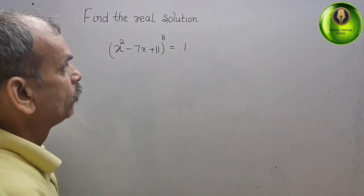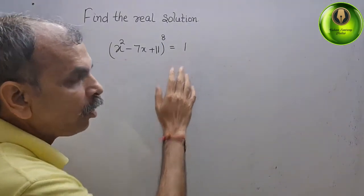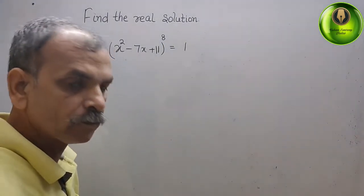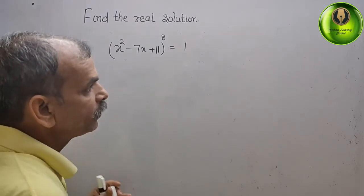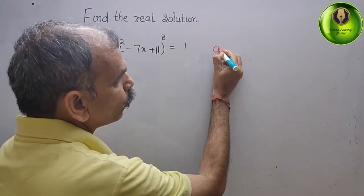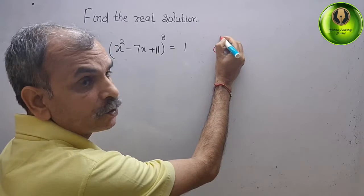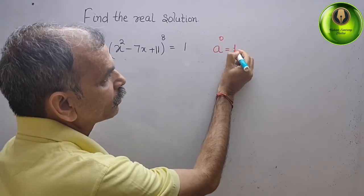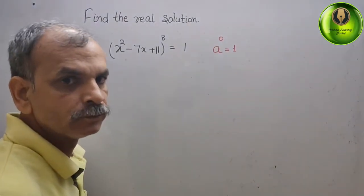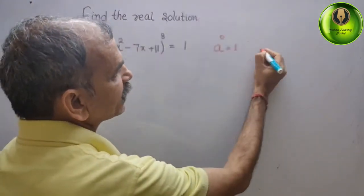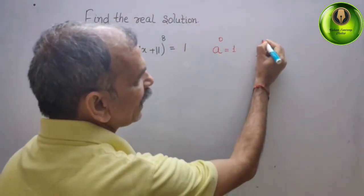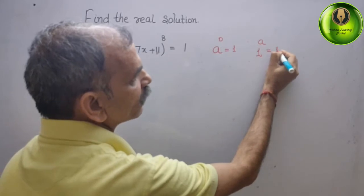Now, how will 1 come? 1 will come if any number's power is 0, you will get 1. Or, we can say, 1's power is any integer, you will get 1.